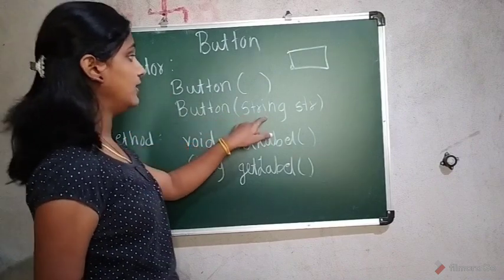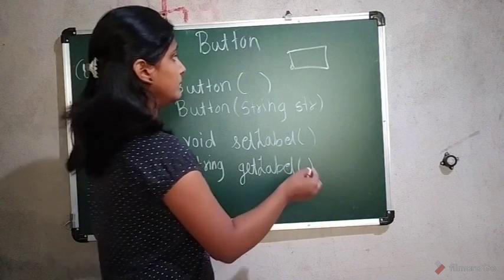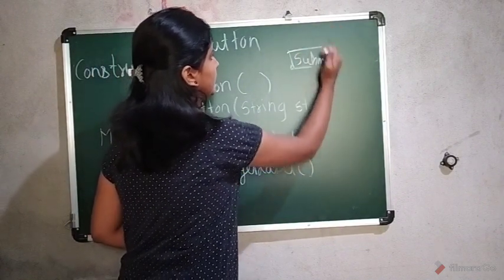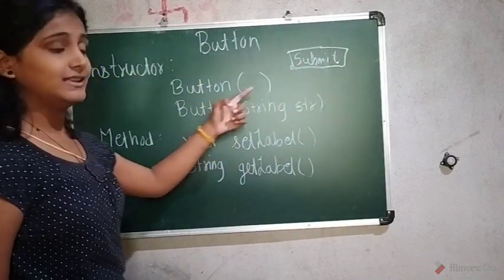Now second one, the constructor with a string. String is passed. Now suppose I wanted to pass the string submit. When submit, it will be seen here. It will be visible here on the button.